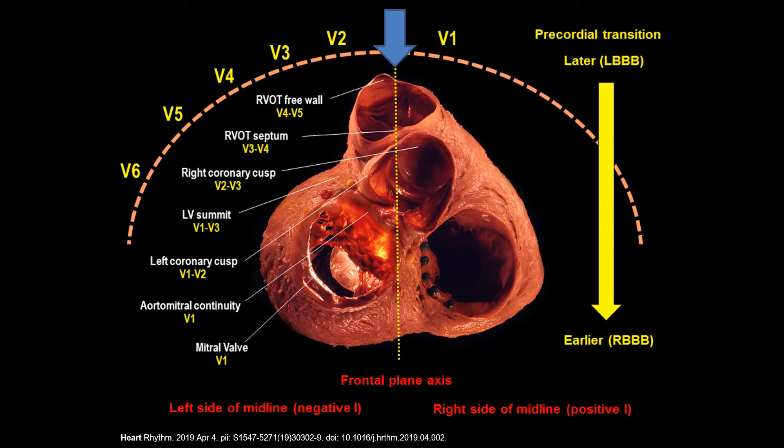This is an interesting schema to understand the ECG patterns of outflow tract ventricular arrhythmias. The free wall of the RVOT is the most anterior structure, and precordial transition becomes progressively earlier as we move toward the anterolateral mitral annulus. Lead 1 polarity allows to discriminate between structures located leftward from the midline from those located on the right side.